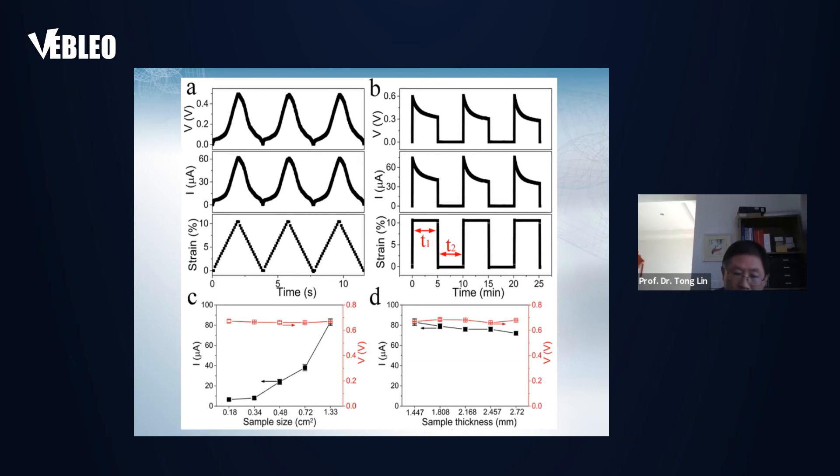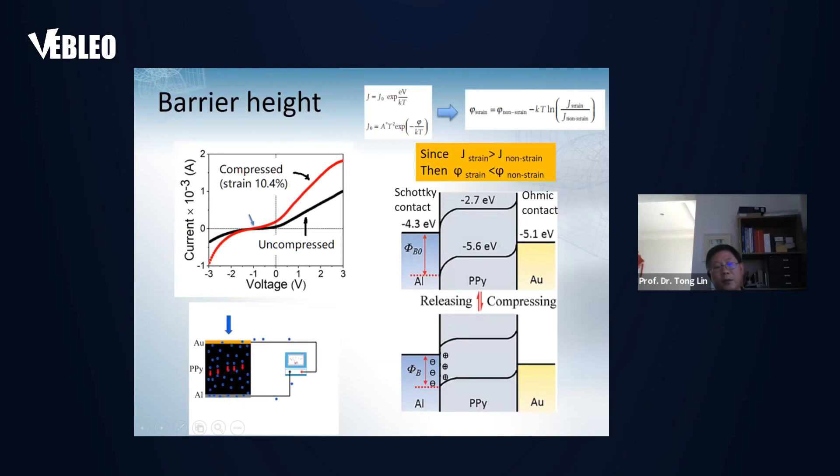If we change the sample size or device size, for example, changing working area, the voltage output doesn't change much, but the current output changes with the working area. With increasing the working area, the current output increases. However, if we just change the disk thickness, we still found the voltage maintained the same, but the current reduces slightly.